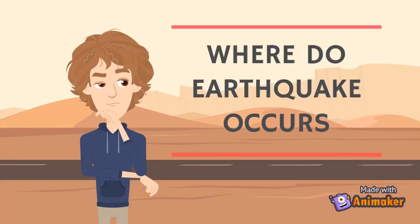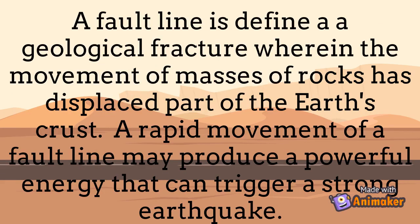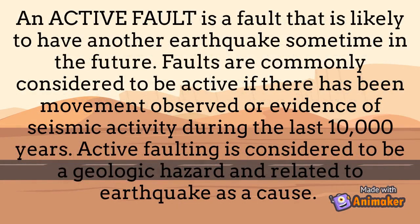Where do earthquakes occur? A fault line is defined as a geological fracture wherein the movement of masses of rocks has displaced part of the Earth's crust. A rapid movement of a fault line may produce a powerful energy that can trigger a strong earthquake. An active fault is a fault that is likely to have another earthquake sometime in the future. Faults are commonly considered to be active if there has been movement observed or evidence of seismic activity during the last 10,000 years. Active faults are considered to be a geologic hazard related to earthquakes as a cause.